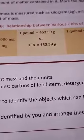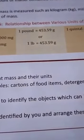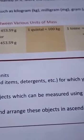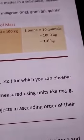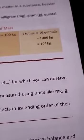1 pound is equal to 453.59 gram. 1 quintal is equal to 100 kg. 1 ton is equal to 10 quintal, that is 1000 kg or 10 to the power 3 kilogram.